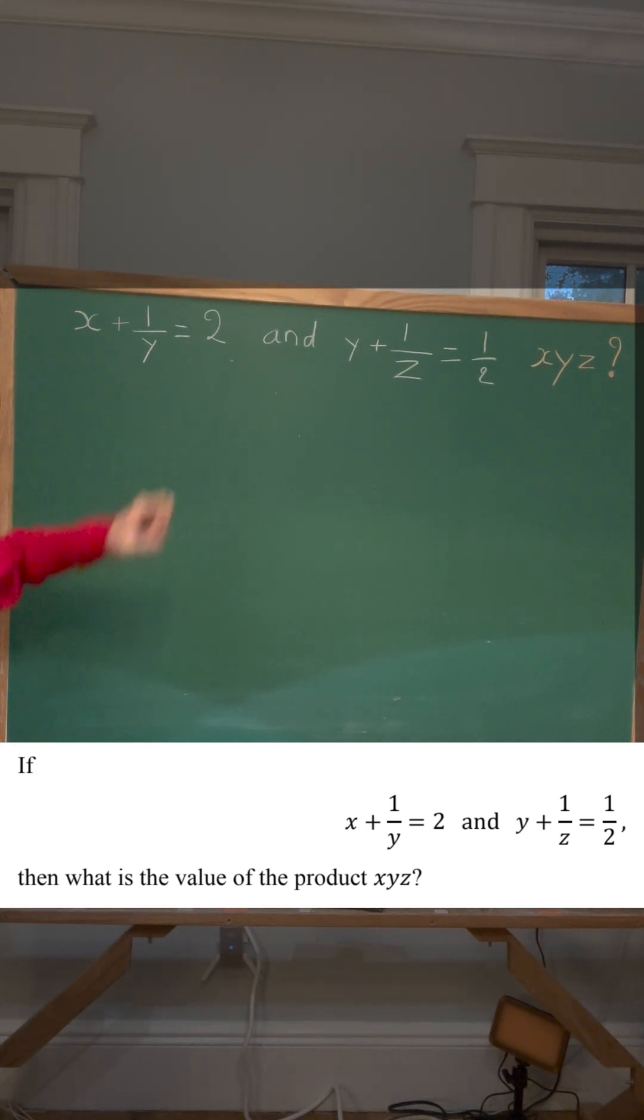The problem gives us that x plus 1 over y equals 2, and y plus 1 over z equals 1 half, and asks for xyz.